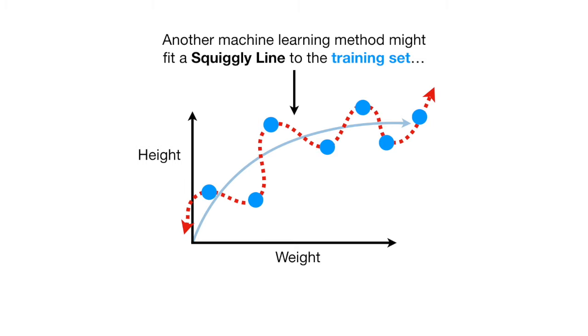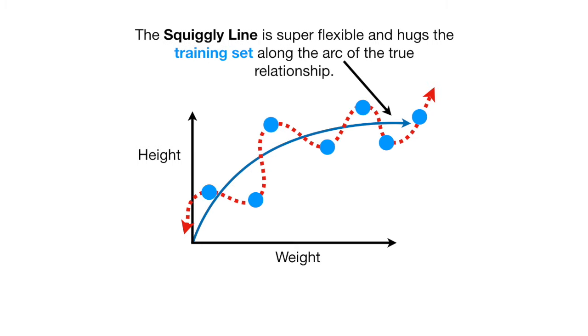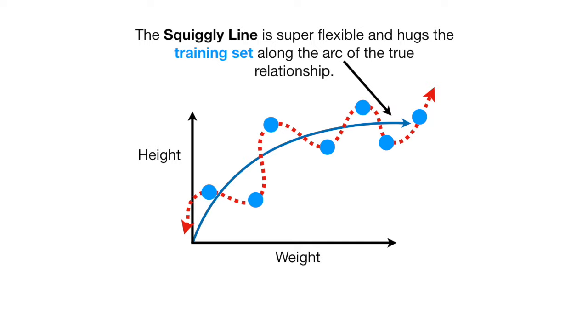Another machine learning method might fit a squiggly line to the training set. The squiggly line is super flexible and hugs the training set along the arc of the true relationship. Because the squiggly line can handle the arc in the true relationship between weight and height, it has very little bias.